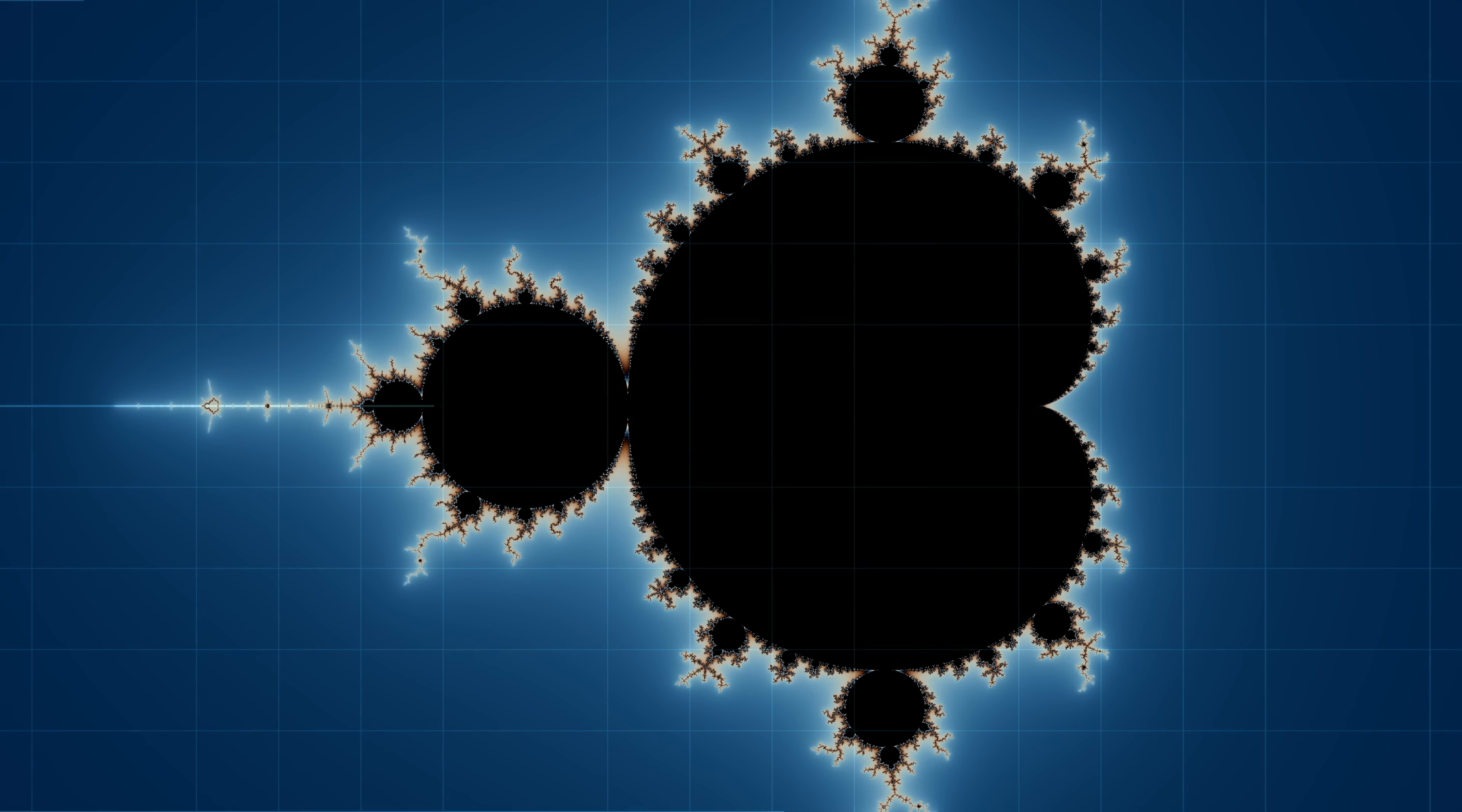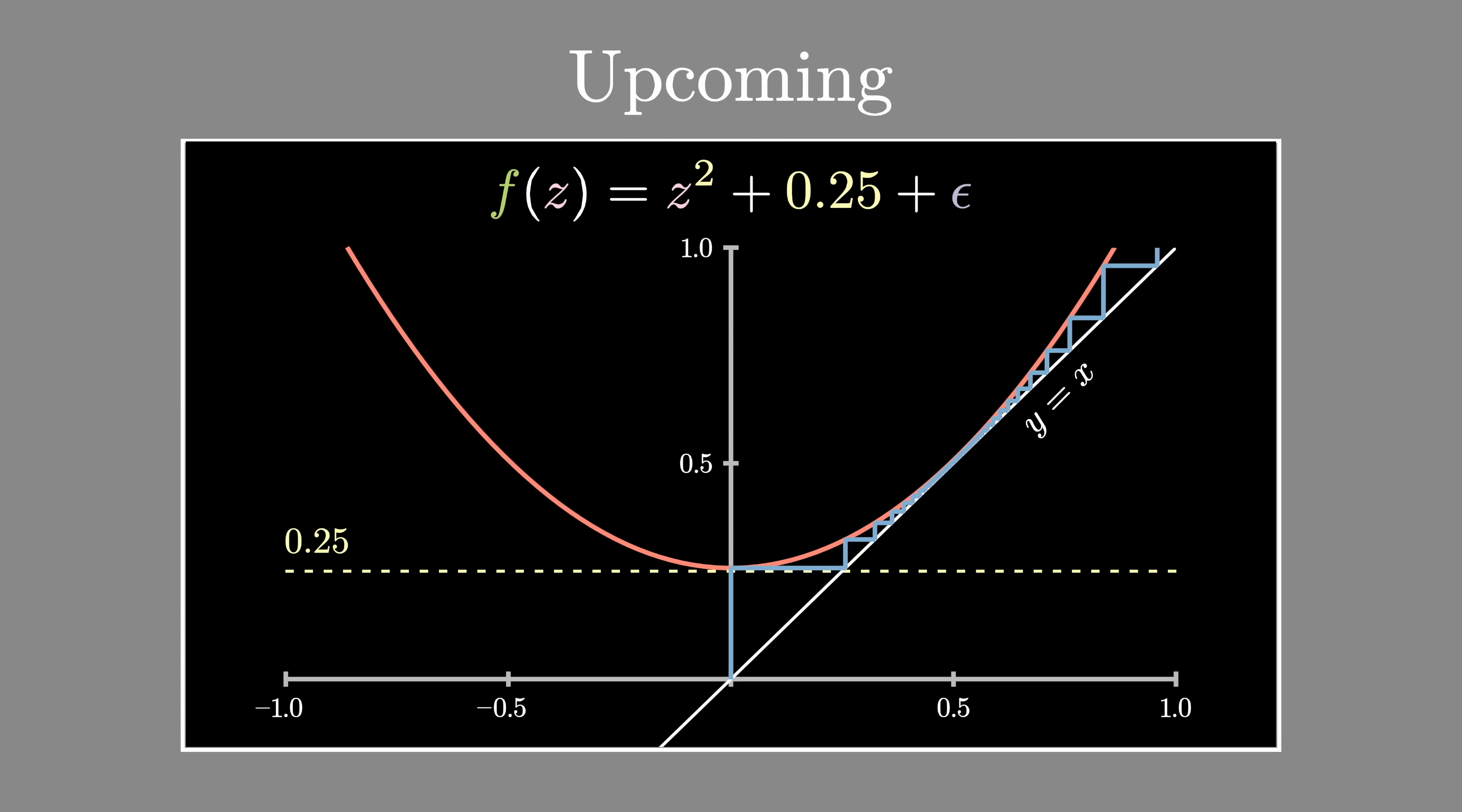And actually, this also happens at the point 0.25, except using negative powers of 100 instead of 10. What I want to show you today is an explanation for why this occurs, which happens to be surprisingly short.